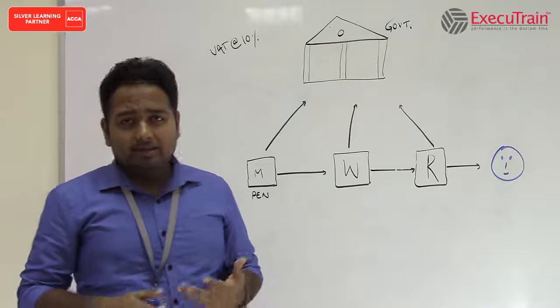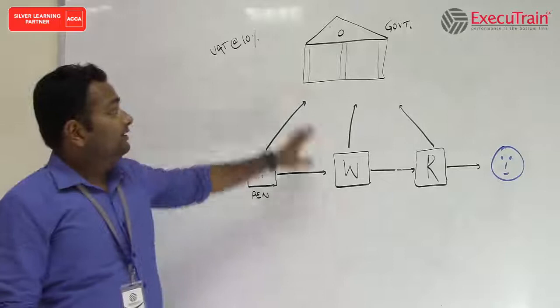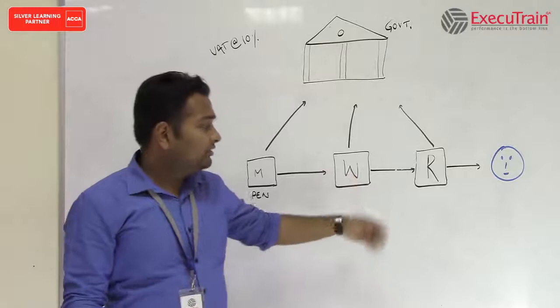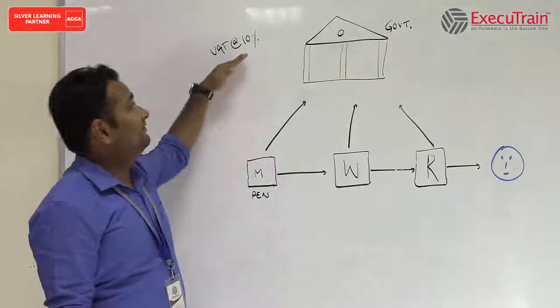So if you look at the board right now, you see we have the government out here and we have a manufacturer - suppose he is a manufacturer of pens. He sells the pens to the wholesaler, the wholesaler transfers it to the retailer, and the retailer sells it to the customer. The VAT rate we have taken is 10% for this illustration.